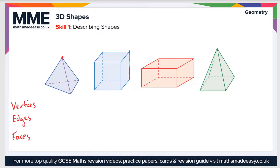Faces are the 2D shapes that make up the sides of 3D shapes. For instance, this square here is a face. So let's go through each of these shapes one by one and go through each of these properties.